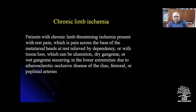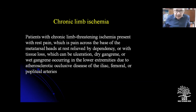Chronic limb ischemia presents with rest pain — pain across the base of the metatarsal heads at rest, relieved by dependency — and tissue loss which can be ulceration, dry gangrene, or wet gangrene occurring in the lower extremities due to atherosclerotic occlusive process of iliac, femoral, and popliteal arteries. The popliteal, iliac, and femoral arteries are commonly involved. In diabetes, the peroneal artery is not usually involved.